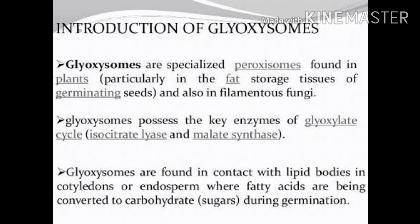The key enzymes involved in the glyoxylate cycle are isocitrate lyase and malate synthase — these are very important for CSIR NET. Glyoxysomes are found in contact with lipid bodies in the cotyledon or endosperm, where fatty acids are converted into carbohydrate during germination. The role of the glyoxylate cycle is to mobilize oil or fat into soluble sugar to help proper seed germination.